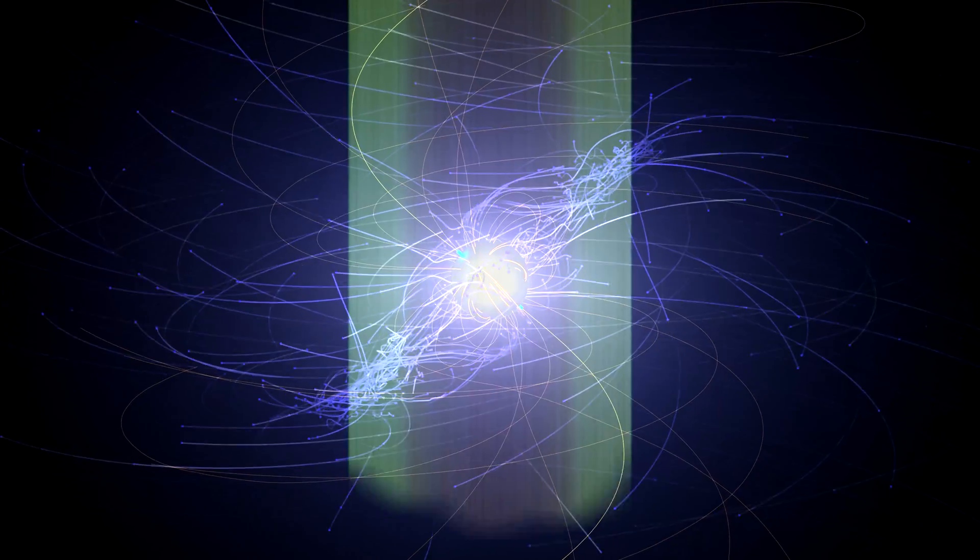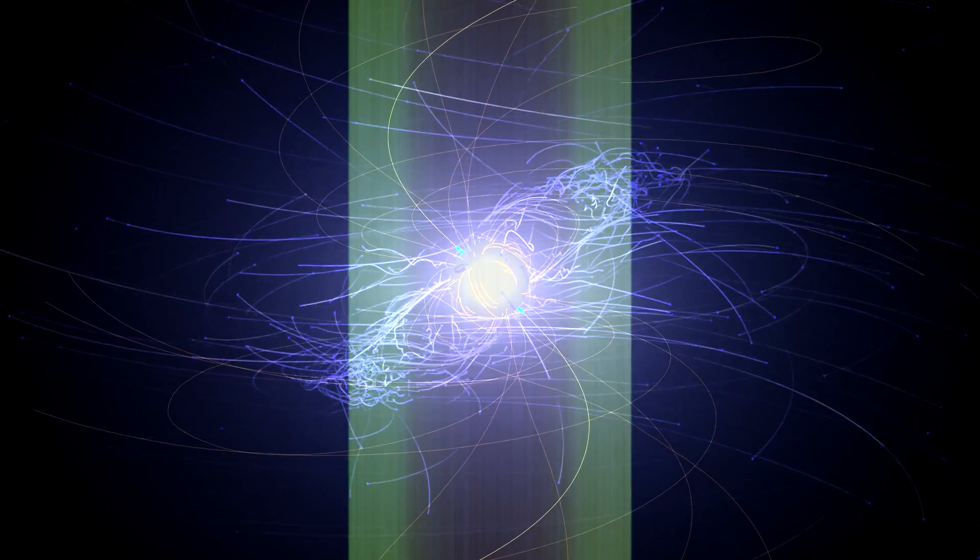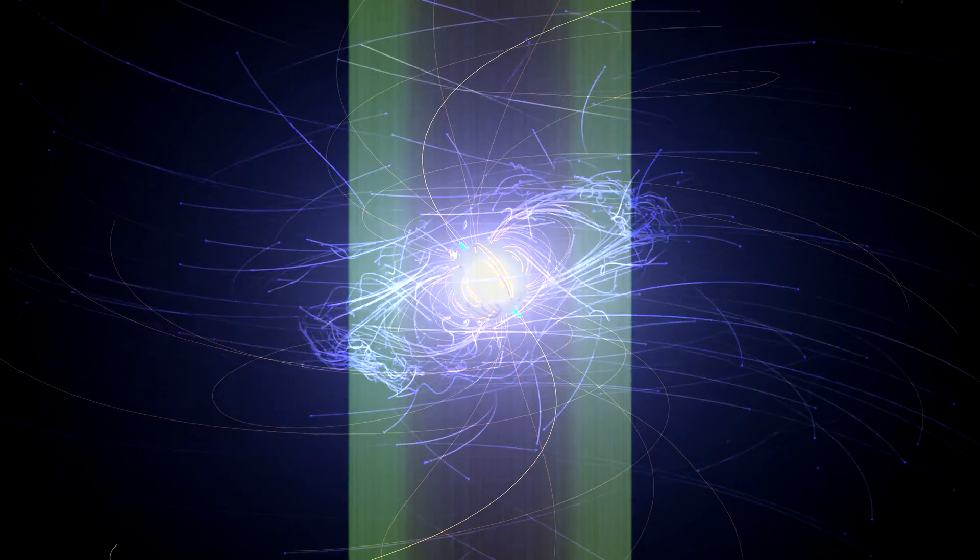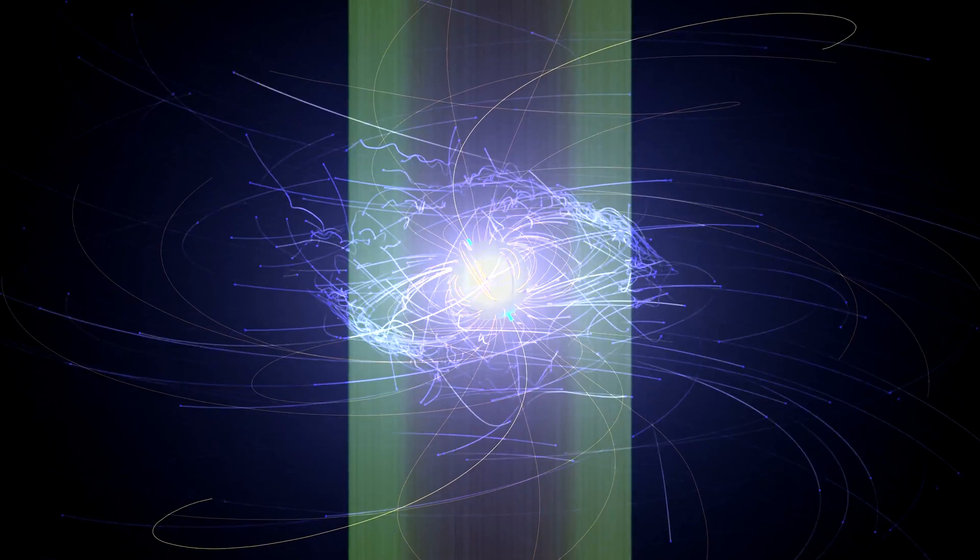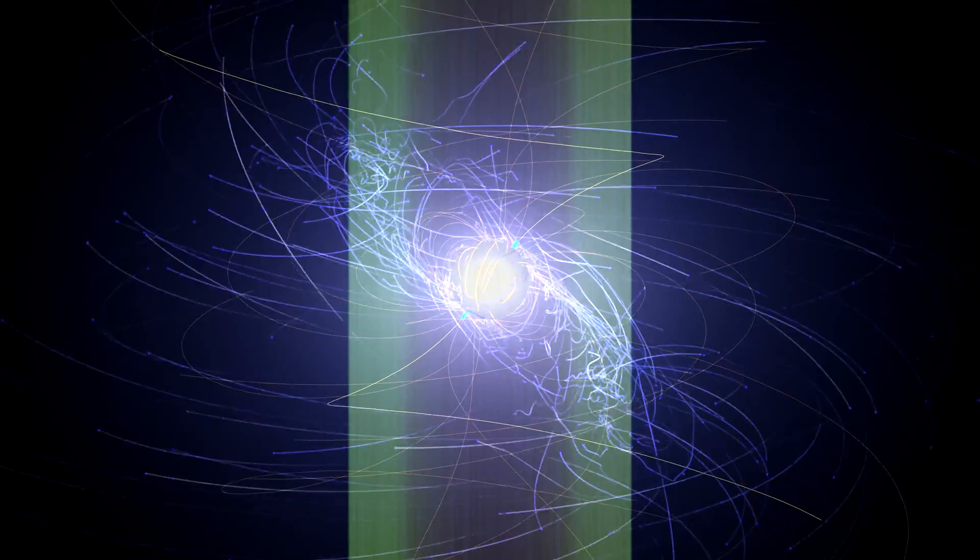Just before reaching the light cylinder, these simulations show that a population of medium energy electrons scatter wildly, sometimes even back toward the pulsar. Some speed up, others slow. Most eventually slip past the light cylinder and head out into space.